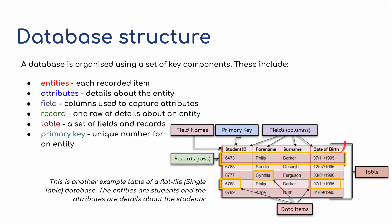The table is all of the information — all the fields and all the records together. The primary key is a unique identifier. For example, we might have more than one Philip Barker in the school — we can see two here, both born on the same date. But each has their own unique number: that's the primary key, a unique identifier.